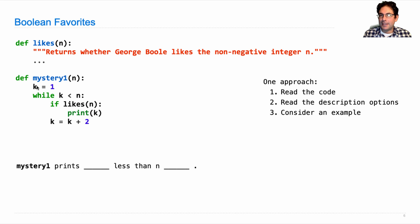So k starts out at one, while k is less than n this doesn't change k or n, so we're adding two, k will be three and then five and then seven, so this will print odd numbers. But it's not going to print all the odd numbers because there's this if statement.